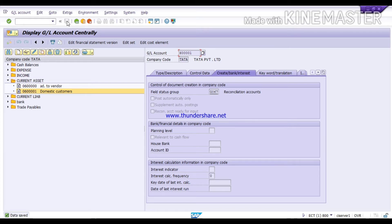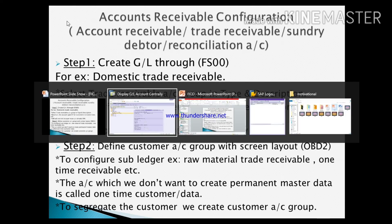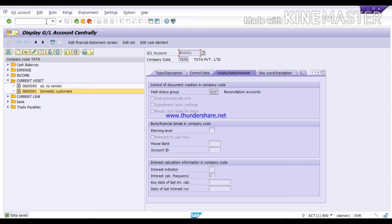Now we will get back to the presentation. Step 2: Define customer account group with screen layout using T-code OBD2, to configure sub-ledgers. For example: raw material trade receivable or one-time receivable. The one-time customer account is used when you don't want to create a permanent master data record. To segregate customers, we create customer account groups under T-code OBD2, just as we did for vendor account groups.